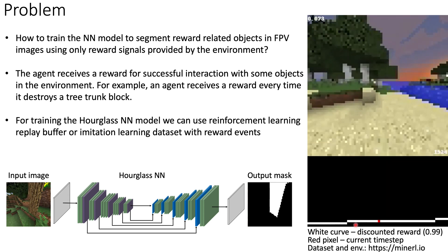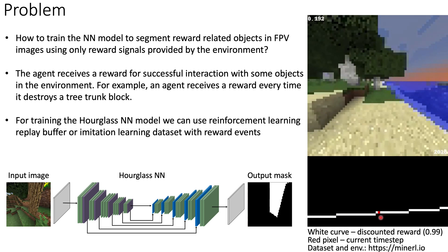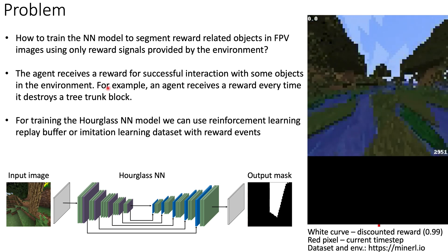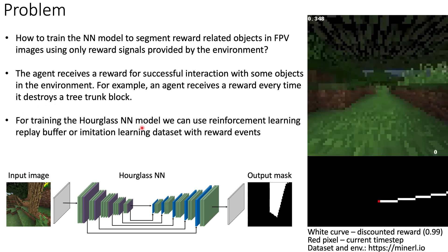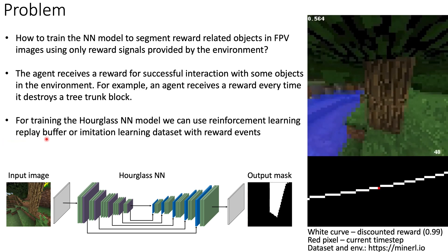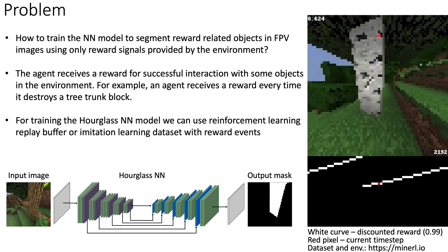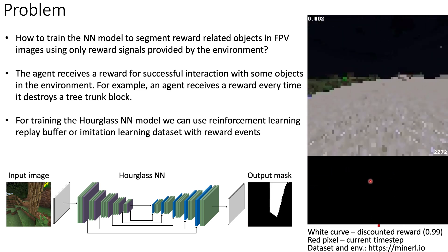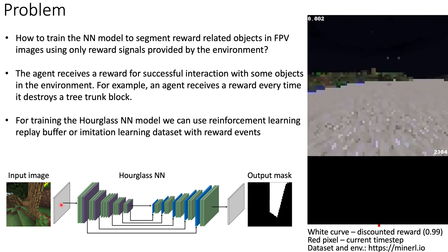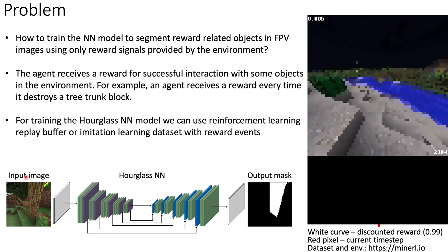Below you can see a discounted reward curve, and the current time step is indicated by the red pixel. Thus, we have the following setup. For training the Hourglass Neural Network model, we can use a Reinforcement Learning Replay buffer or an Imitation Learning dataset with reward events. Using these two sources of information — images and reward events — we need to train an hourglass model to segment reward-related objects in input images.